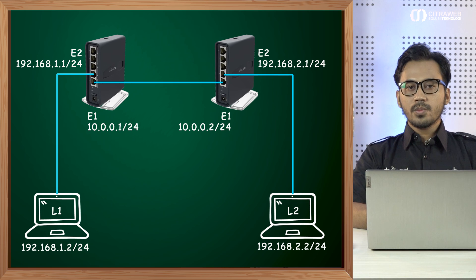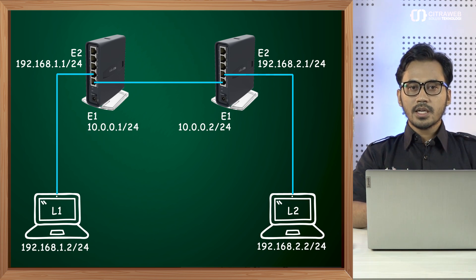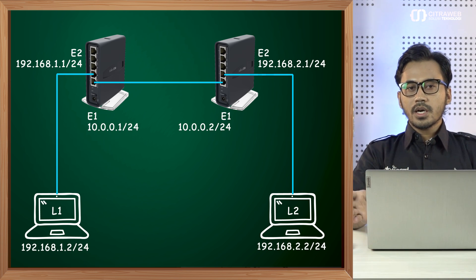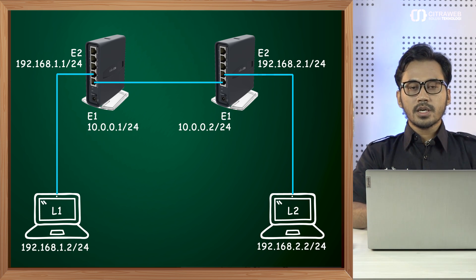Untuk OSPF sendiri terdapat beberapa penyesuaian pada RouterOS versi 7. Jika kita menggunakan RouterOS versi 6, konfigurasi OSPF sangat sederhana karena kita bisa langsung isikan alamat IP network-nya di dalam menu OSPF Network. Namun di versi 7 terdapat sedikit perbedaan. Untuk topologi yang kita gunakan, disini kita punya 2 router, ada R1 dan R2, di masing-masing router ini juga memiliki jaringan lokal sendiri-sendiri, dan konsepnya adalah konsep routing karena nanti akan kita aktifkan OSPF pada topologi jaringan ini.